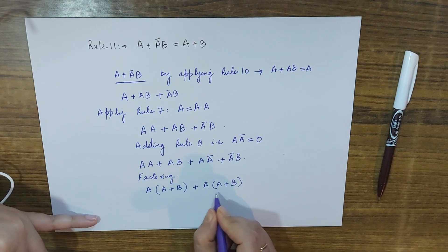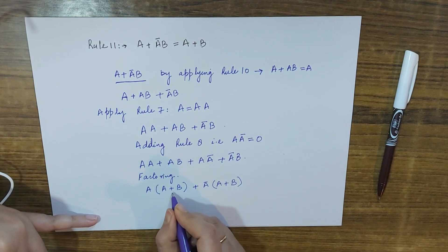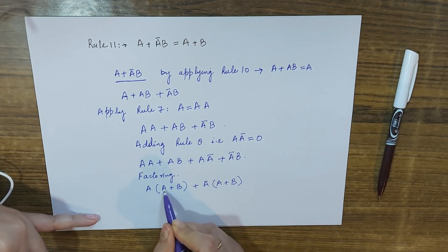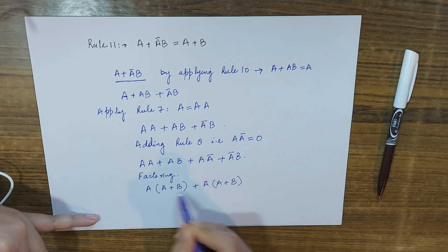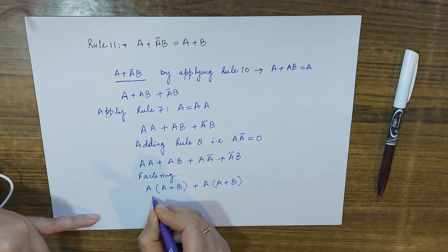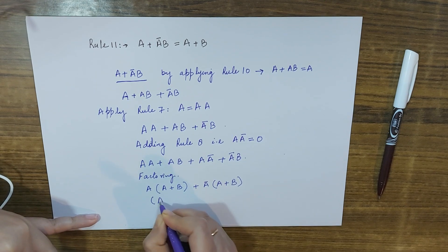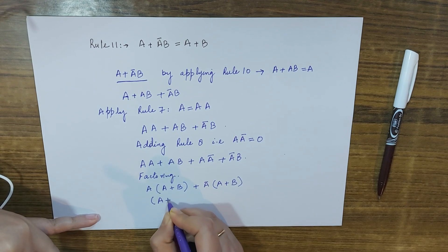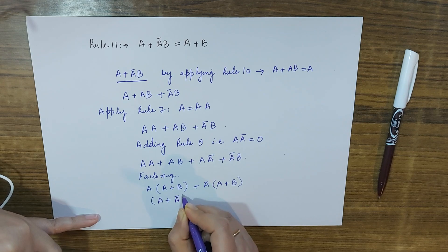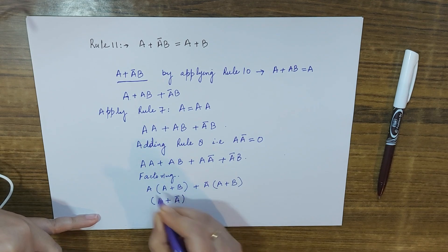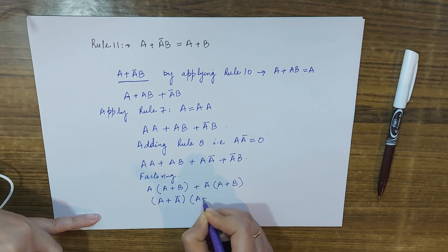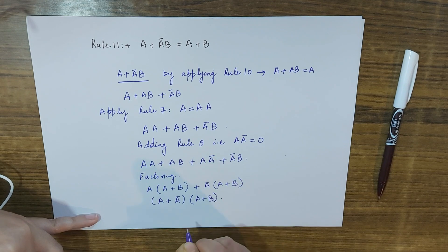Now A plus B is common in both groups, so I factor it out. The expression becomes (A plus B) times (A plus A-complement).